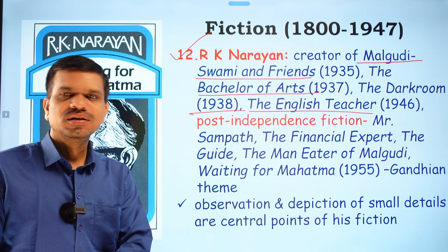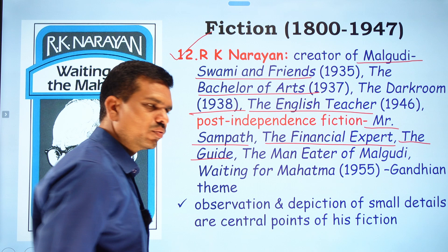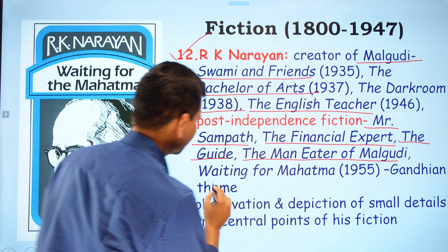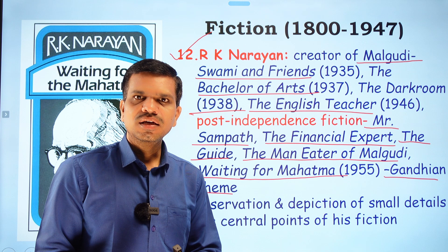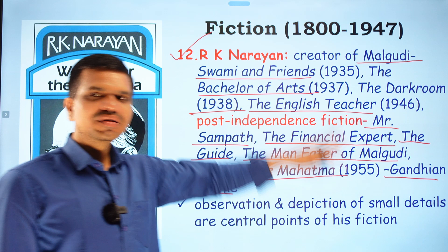R.K. Narayan's post-independence novels include Mr. Sampath, The Financial Expert, and The Guide — on which a Bollywood film was also made. He also wrote The Man-Eater of Malgudi and Waiting for the Mahatma, the latter based on a love story intertwined with Gandhian themes.